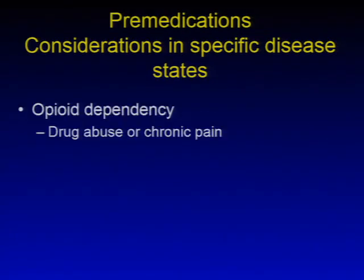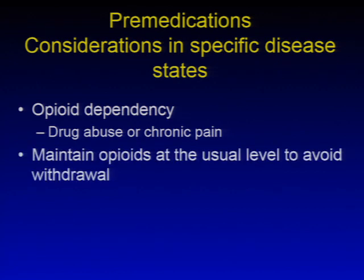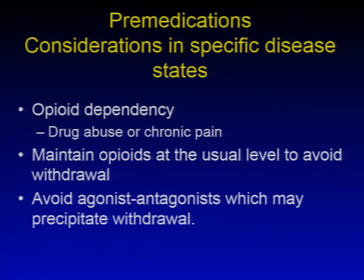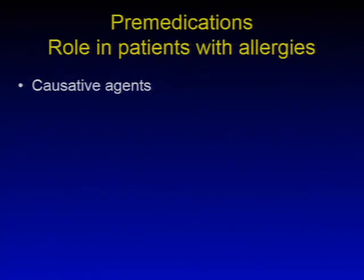For opioid dependency, drug abuse, or chronic pain, maintain opioids at the usual level to avoid withdrawal, and avoid agonist-antagonist preparations which could precipitate withdrawal.